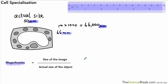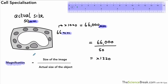Now the units are the same, we can use the formula: 66,000 on the top divided by 50 micrometers, which is given in the question. We get an answer of 1,320 — times 1,320 — so we know that the image has been magnified by one thousand three hundred and twenty times.